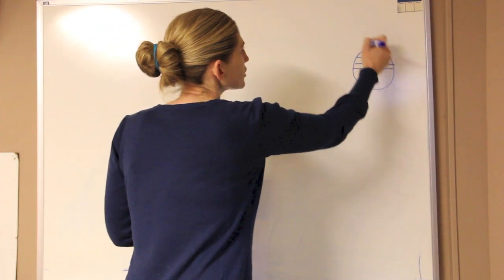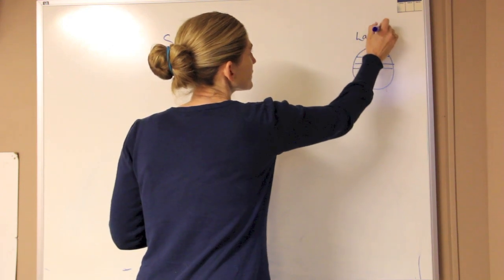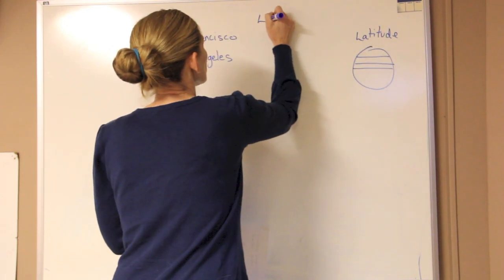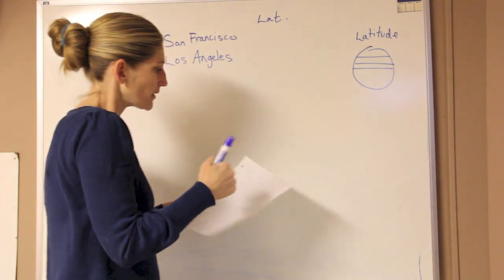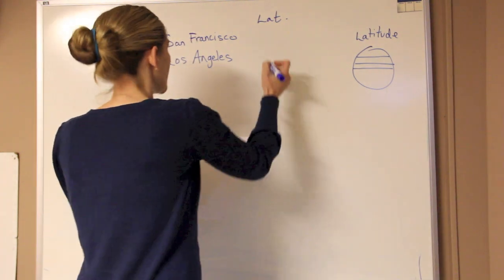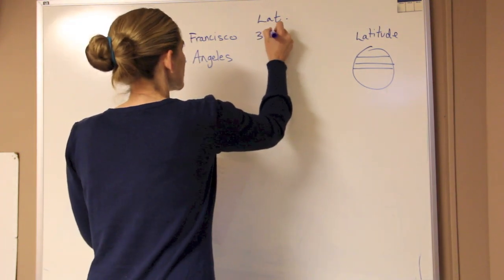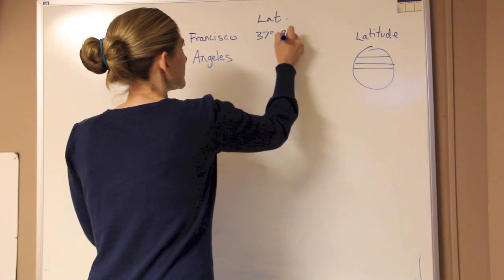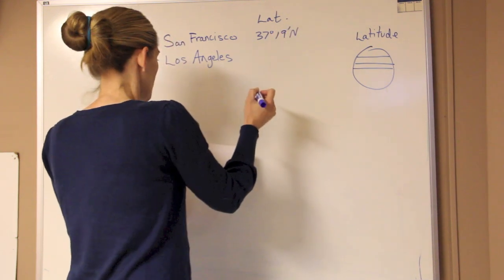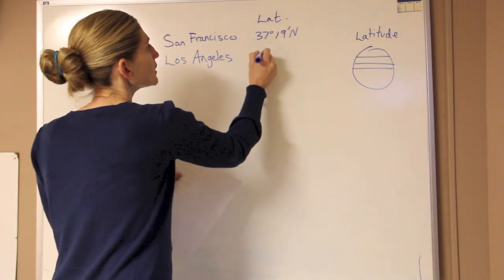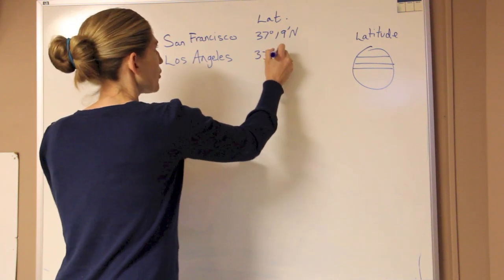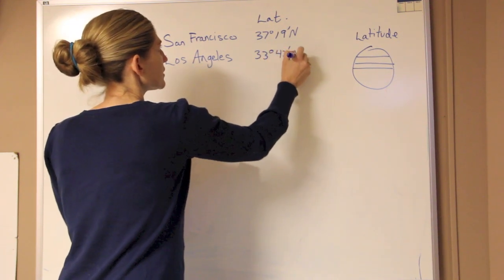So we want to look at just the latitude differences. So I'm going to write that up here. We know from the lab, I just have it down so I don't forget it, it's 37 degrees and 19 minutes to the north, while Los Angeles is 33 degrees and 42 minutes to the north.